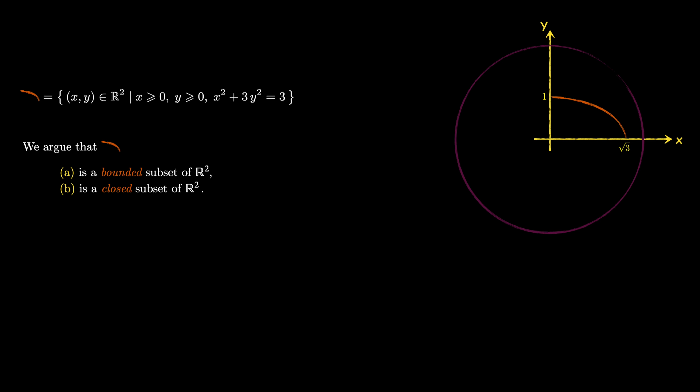To show that this set is closed, we must show that its complement — the points of the plane that are not on the orange curve — is an open subset of ℝ². To do this, we need to show that every point not on the orange curve has a neighborhood that does not intersect with the curve. By a neighborhood of a point, I mean a disk centered at that point excluding the points on the rim.